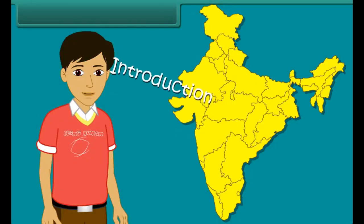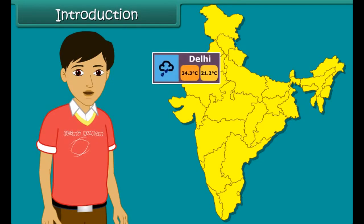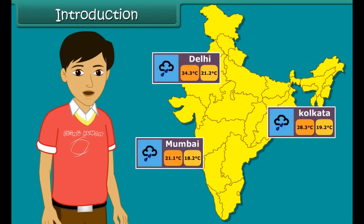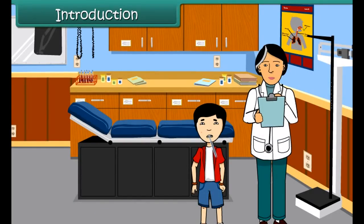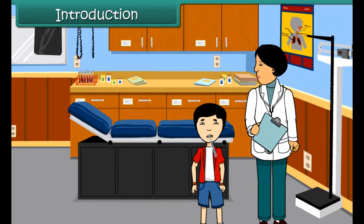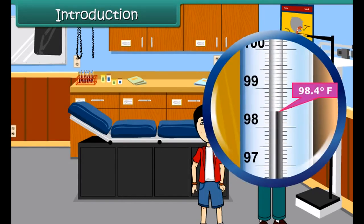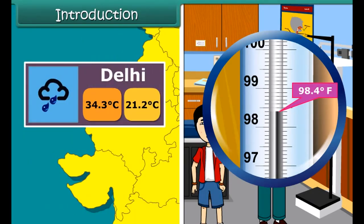Have you seen how the news channels report the maximum and minimum temperatures of a particular place on a particular day? 34.3 degrees Celsius, 21.2 degrees Celsius. When you go for your regular checkup, does your doctor check your body temperature and report it as 98.4 degrees Fahrenheit? The dots you see in these figures are known as decimals, and these figures are known as decimal numbers.